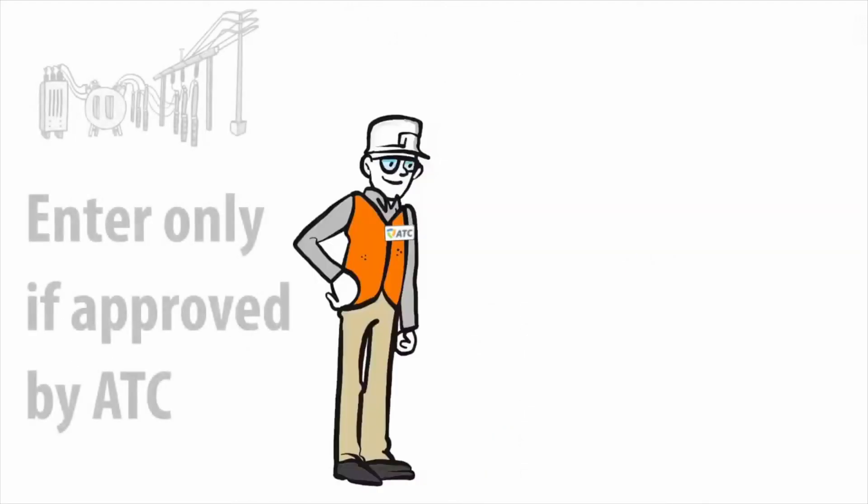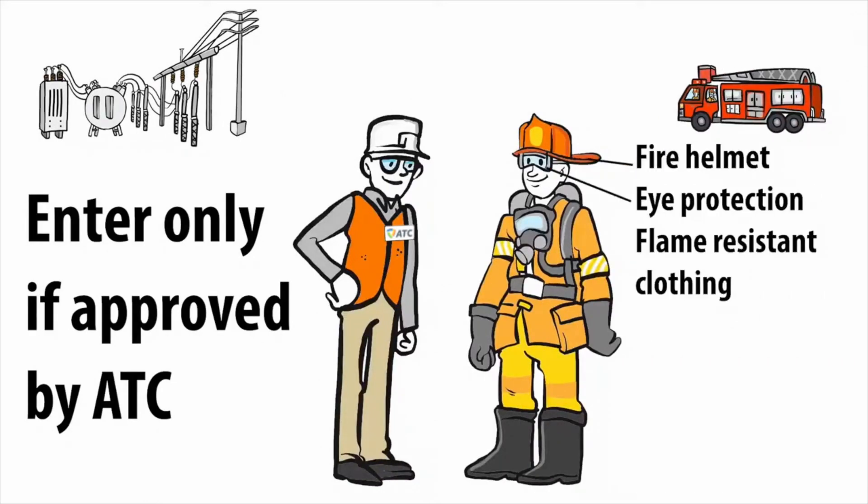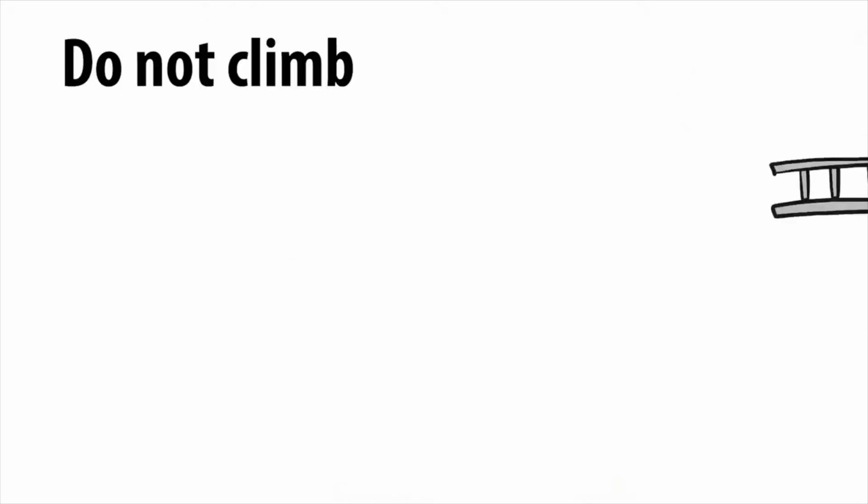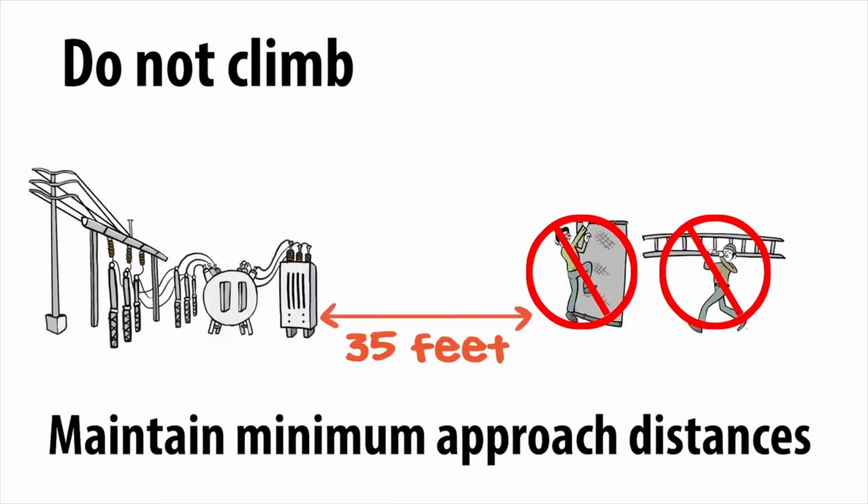If an ATC representative approves entering the substation, a fire helmet, eye protection, and flame retardant clothing are required for entry. Do not climb. You're safer on the ground. Maintain minimum approach distances.